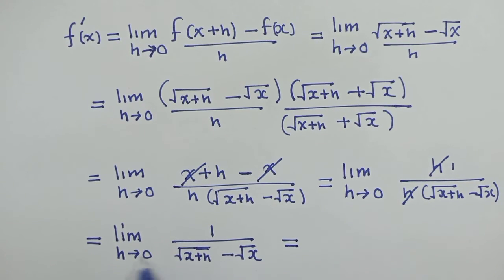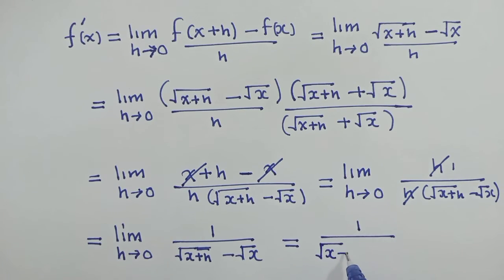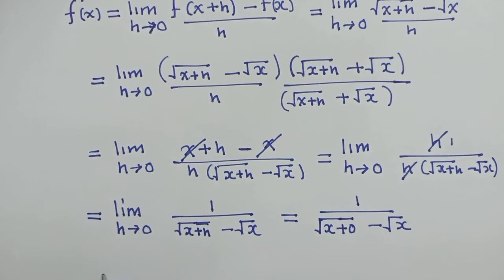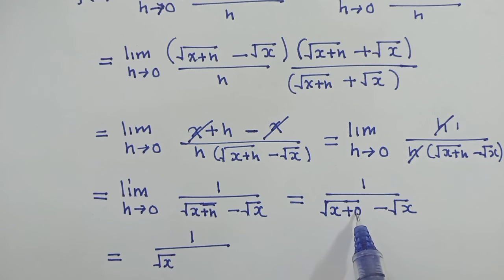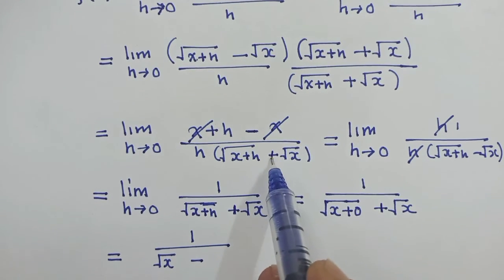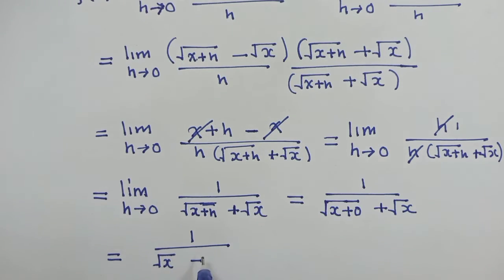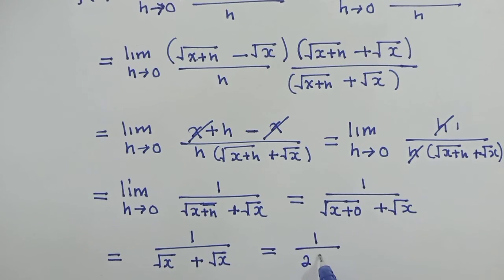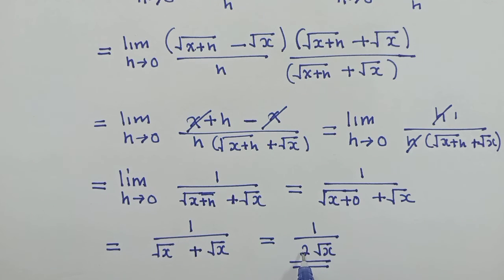Which is equal to, when we substitute h equals zero, we will have 1 over root of x plus zero plus root of x. The zero disappears, so we get root of x plus root of x, which gives us 2 root of x in the denominator. So our final answer is 1 over 2 multiplied by root of x.